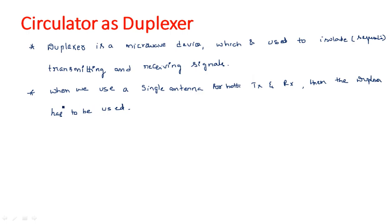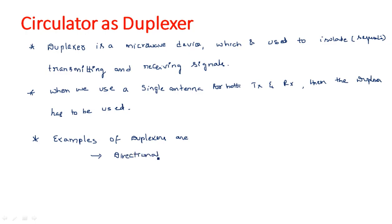That is the main purpose of the duplexer. These duplexer devices can be of different types. Examples of duplexers are: first, directional coupler; second, circulator; and third, isolator.